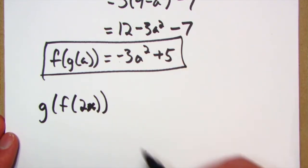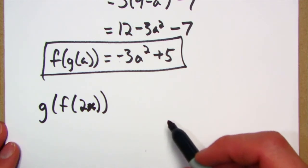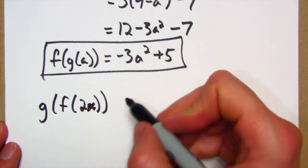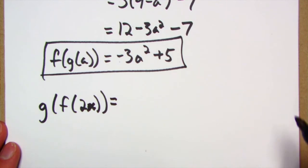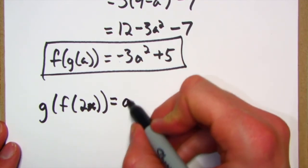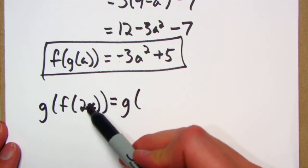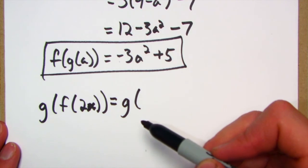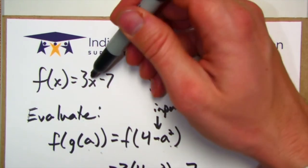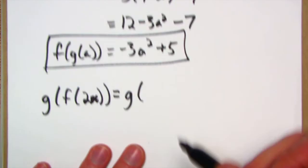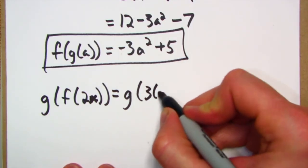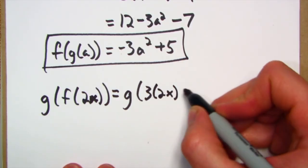g of f of 2x. Pause the video, you can do it. All right, I'm just going to trust that you paused the video and you tried it. g of f of 2x is going to be g of... or f of 2x, sorry. g of, all right, I'm going to put a 2x in the f function. Where am I putting the 2x? I'm putting the 2x in place of this x. So that's 3 times 2x and then minus 7.